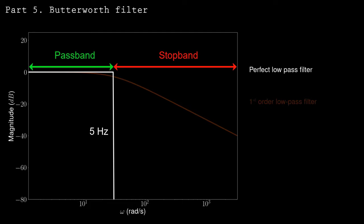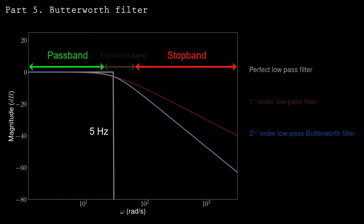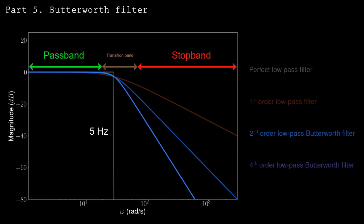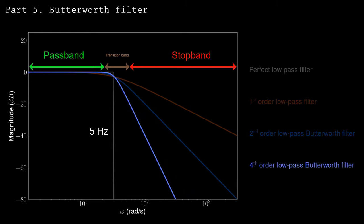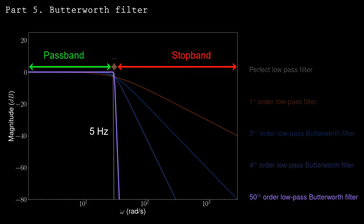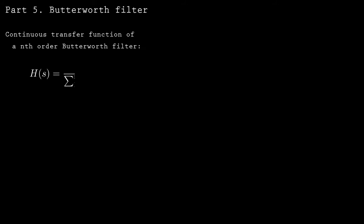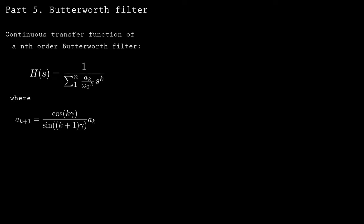There are many different types of higher-order filters. Here I'll show you the Butterworth low-pass filter. A second-order Butterworth low-pass filter has a similar response to the first-order filter but offers greater attenuation, resulting in a smaller transition band. Increasing to a fourth-order Butterworth filter shrinks the transition band further. At a 50th-order filter, the magnitude response is very close to the perfect low-pass filter. You might think, why not always use a thousandth-order Butterworth for a perfect cutoff? Of course, there's no free lunch in signal processing — but we'll get to that in a moment.